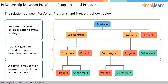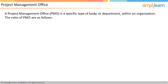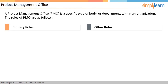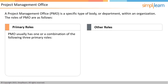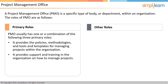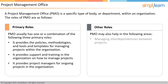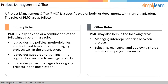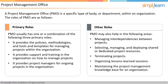The Project Management Office, or PMO, is a specific type of body or department within an organization. The PMO may take up any one or a combination of three primary roles: it provides the policies, methodologies, and tools and templates for managing projects; it provides support and training on how to manage projects; and it provides project managers for different ongoing projects. PMO may also help in managing interdependencies between projects, selecting and deploying shared or dedicated project resources, terminating a project if need be, and organizing lessons learned sessions while maintaining the project management knowledge base.